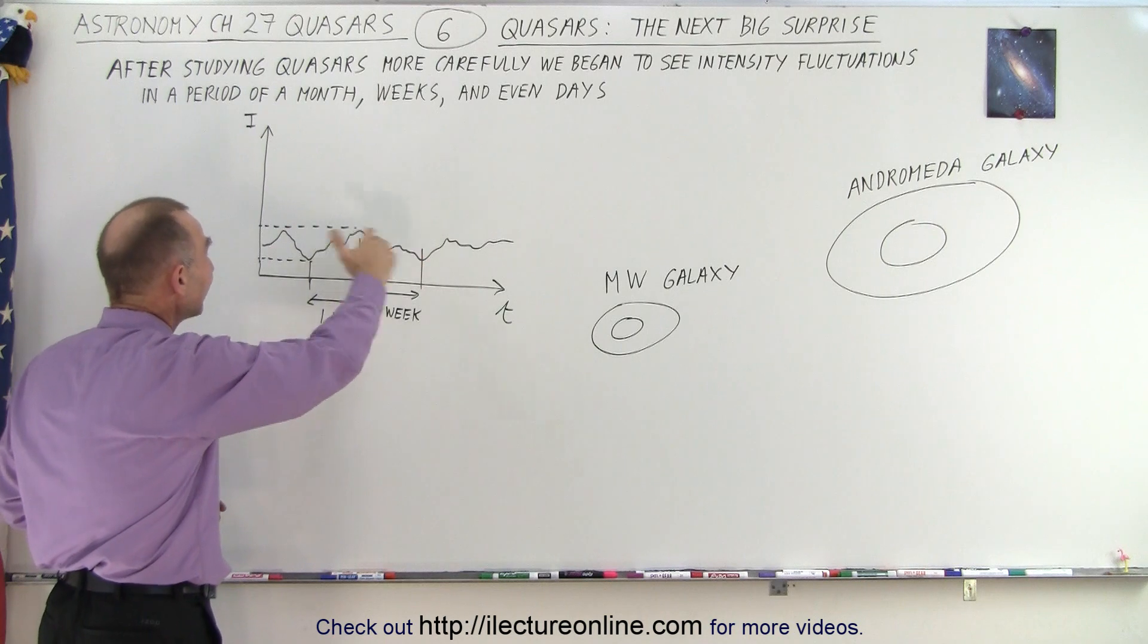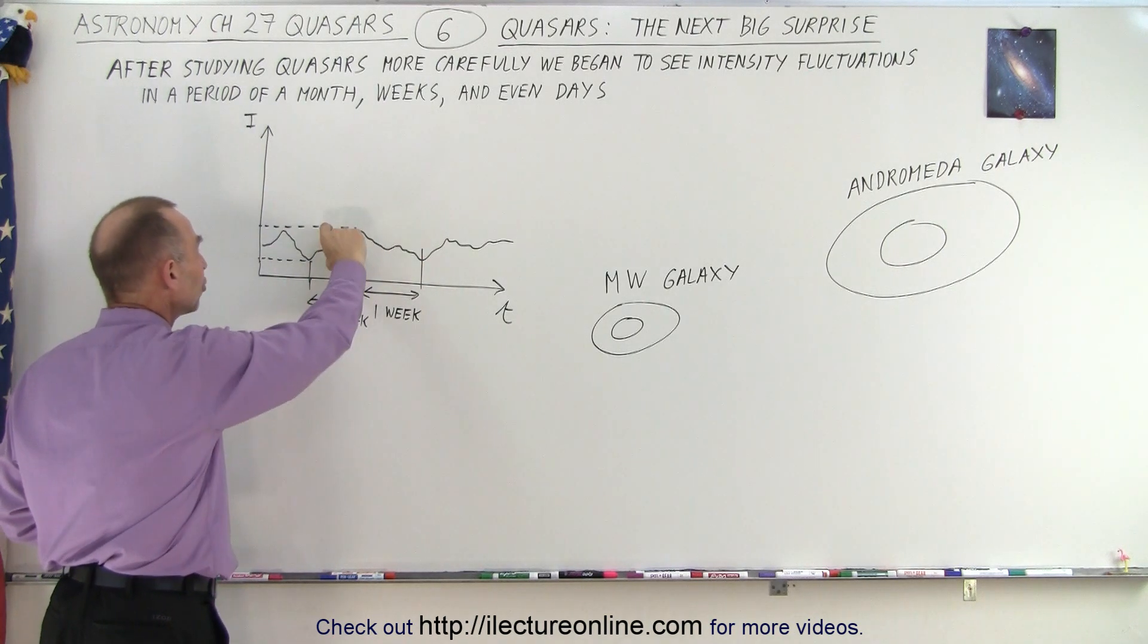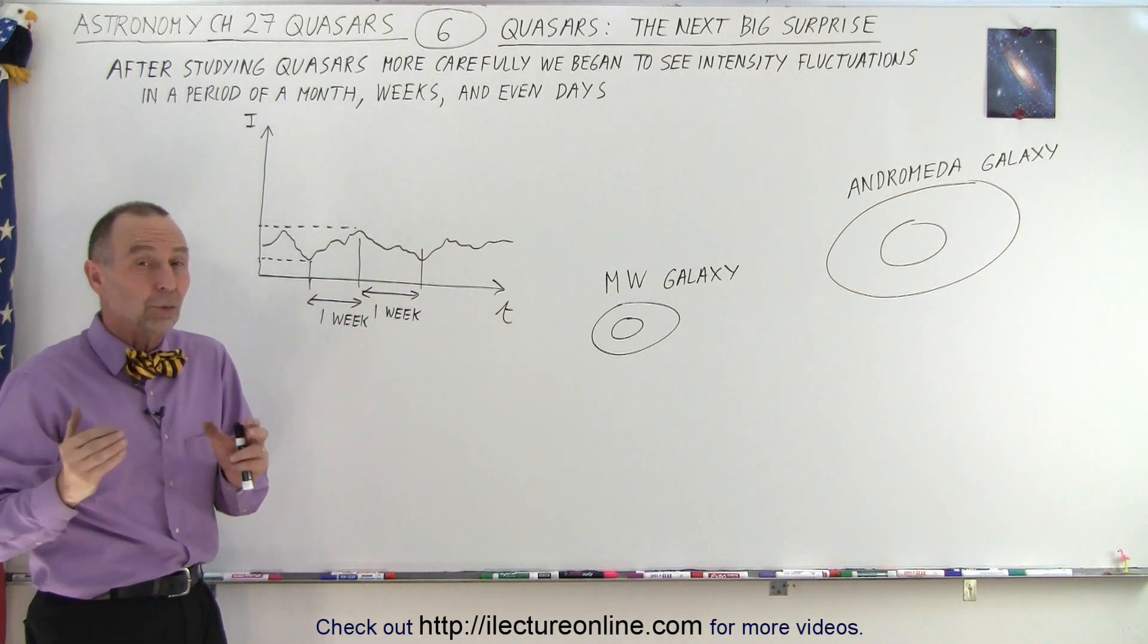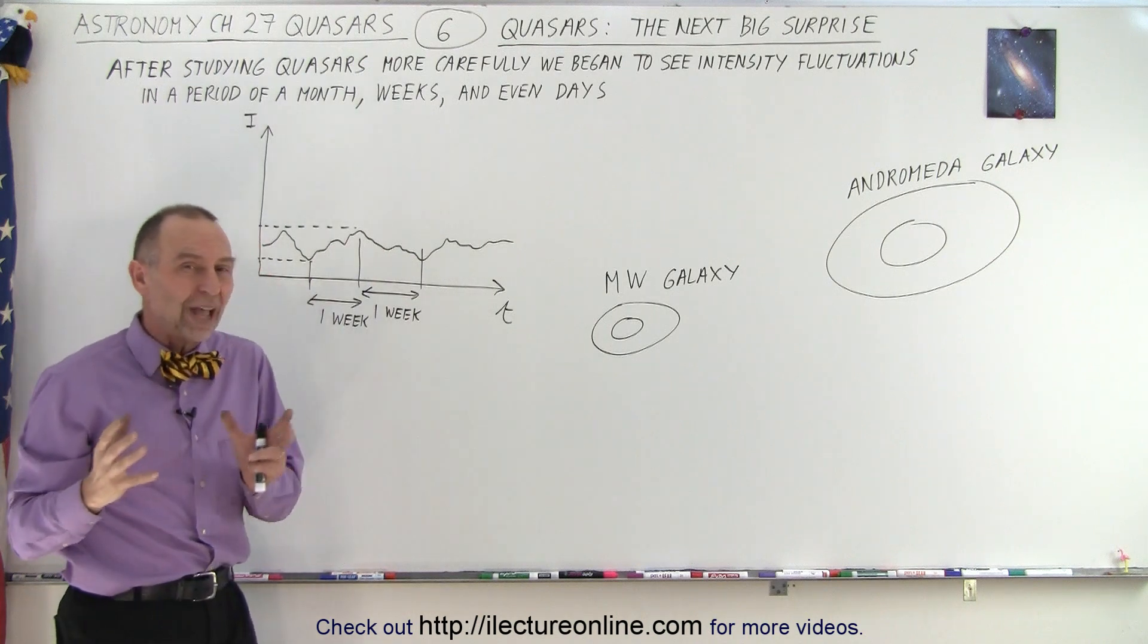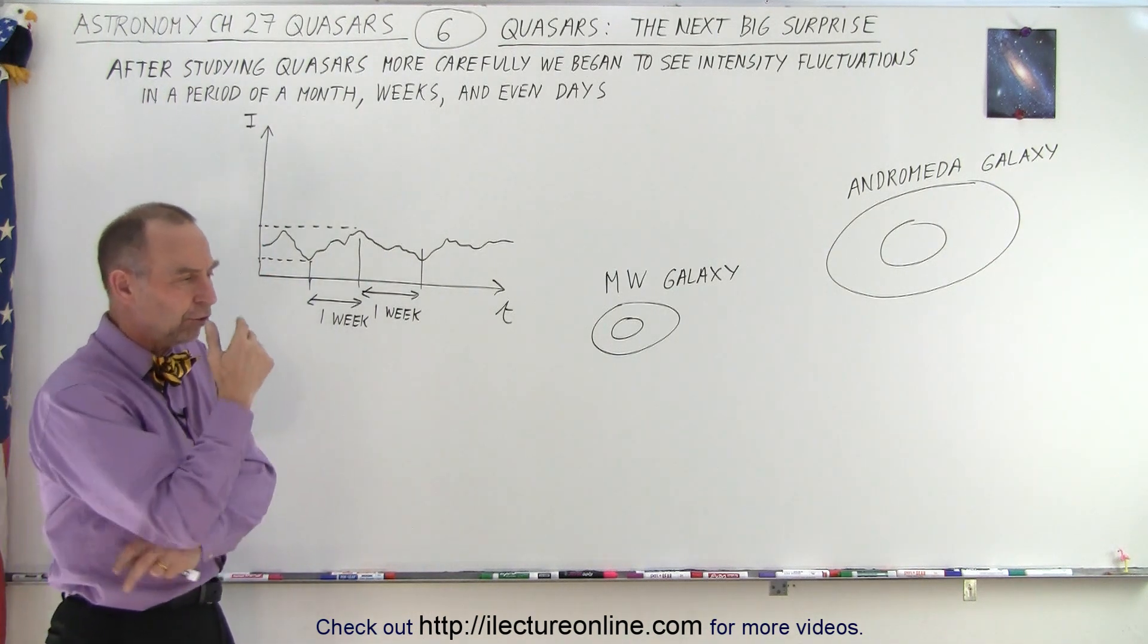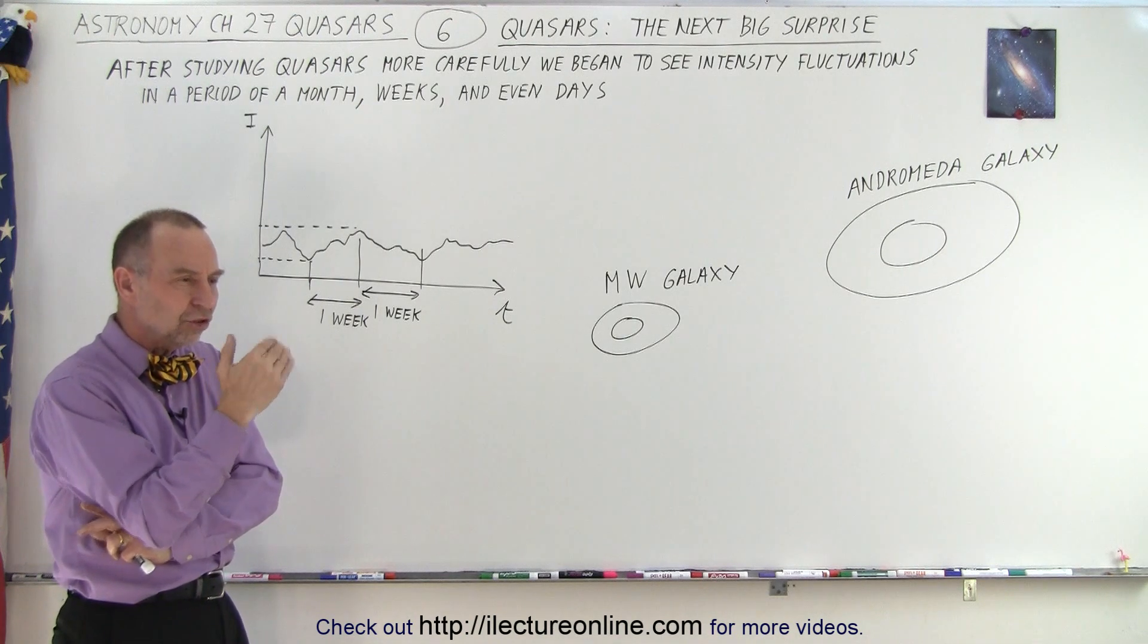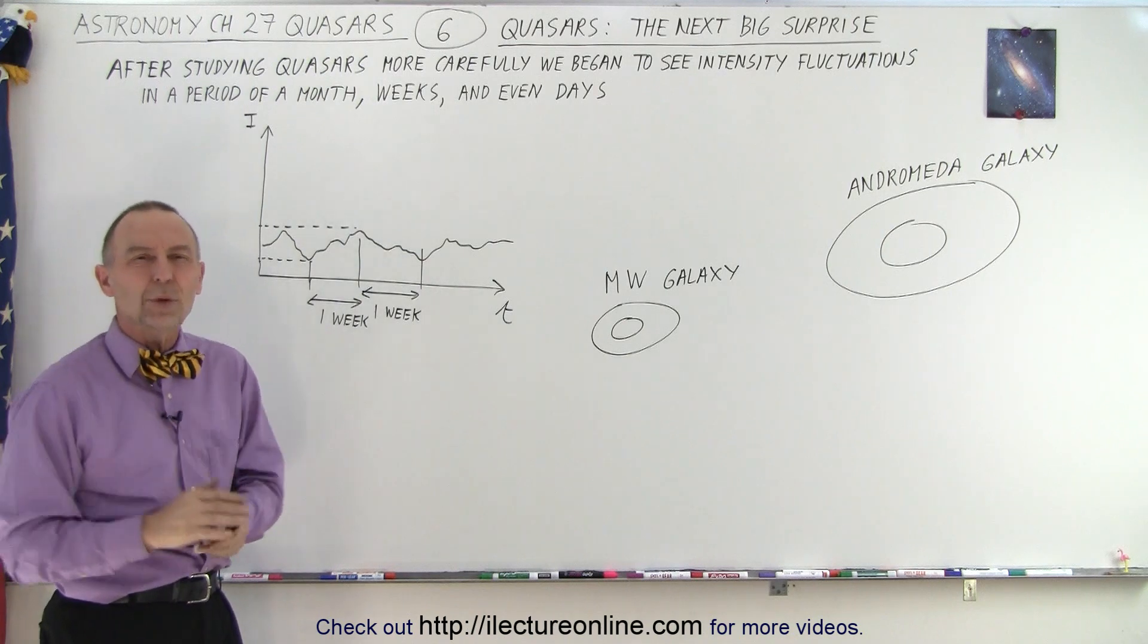The energy curve, the intensity of the radiation over a period of time. We could see that it could change as much as 50% in a single week. It could become more intense and it could become weaker in as much as a single week, by as much as half. So how can a galaxy change its intensity by as much as 50% in just a single week?